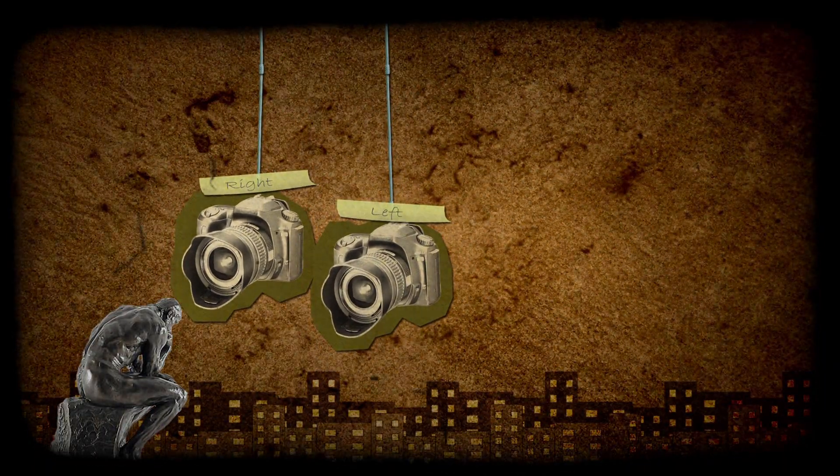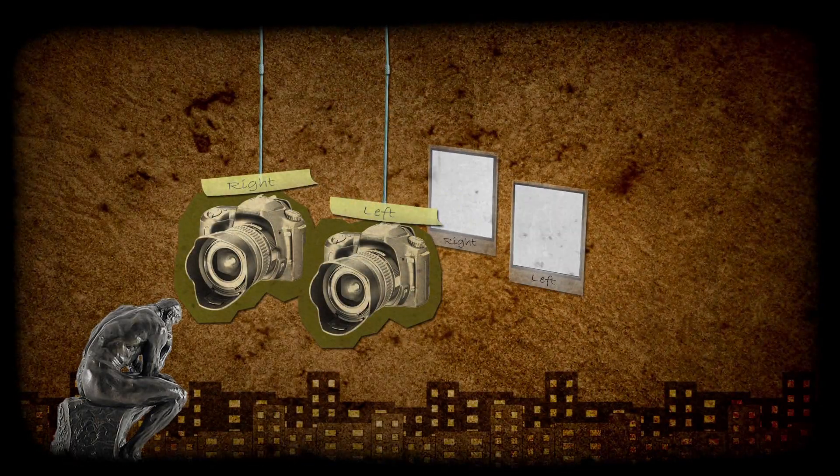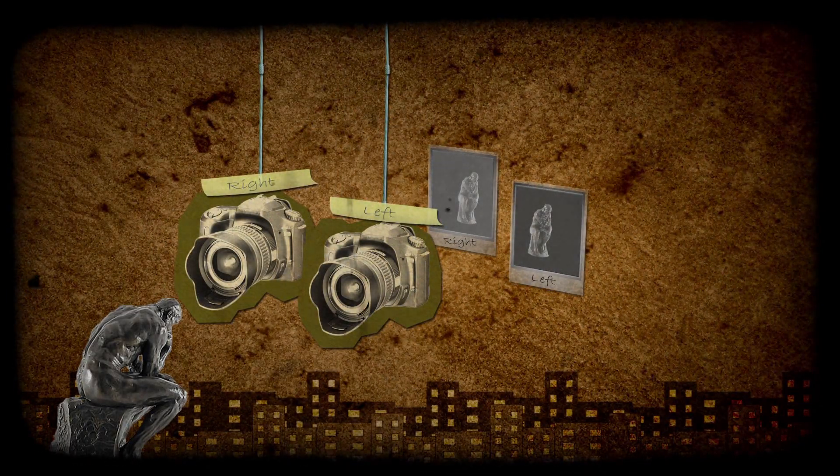So, the first step to reproduce stereoscopic images is to capture two images of the same subject from slightly different points of view, the same way our eyes work.